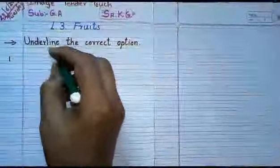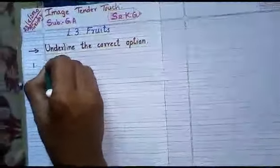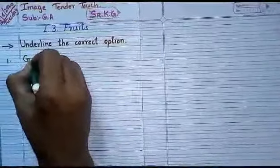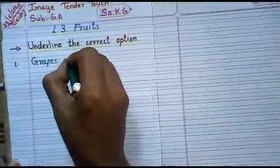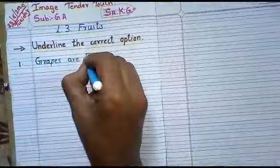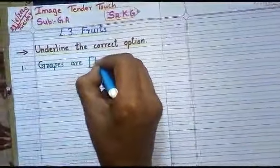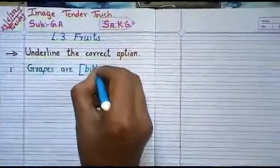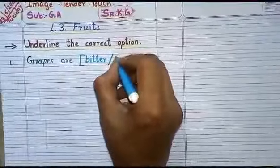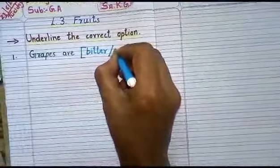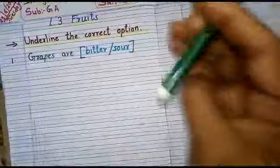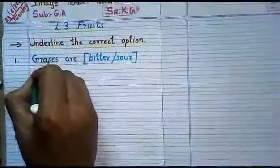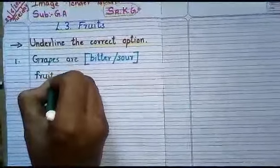Number 1. Grapes. G-R-A-P-E-S. Grapes are bracket bitter, B-I-T-T-E-R, or sour, S-O-U-R. Fruits. F-R-U-I-T. Fruit.